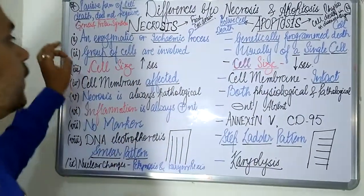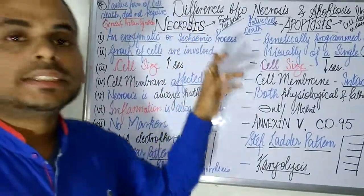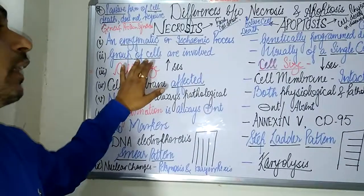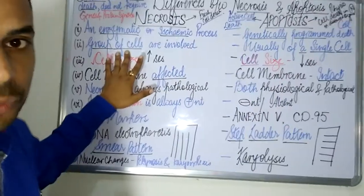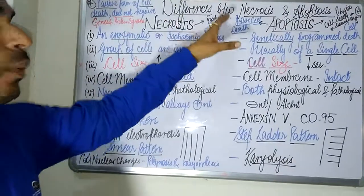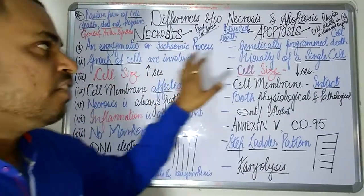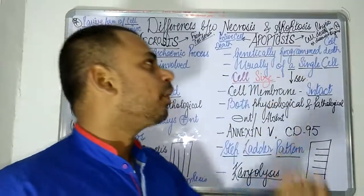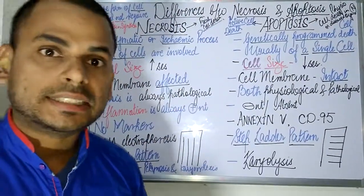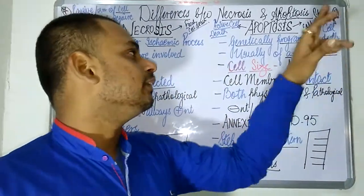In the process of necrosis, always a group of cells are involved. So necrosis is a focal cell death, but a group of cells are involved, whereas in the process of apoptosis, it usually occurs in a single cell.